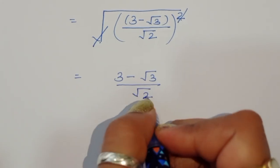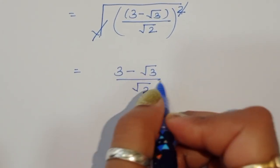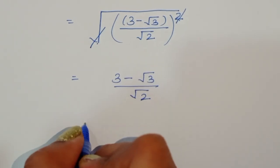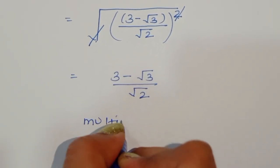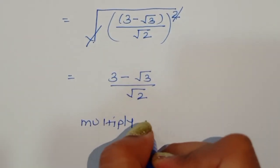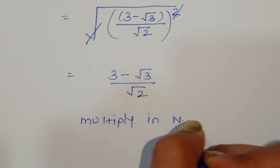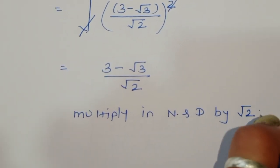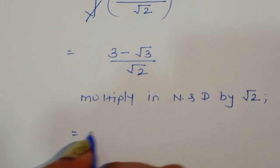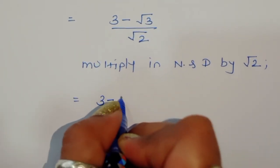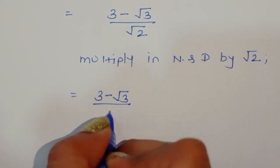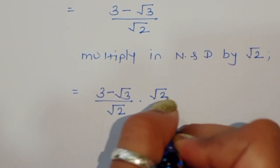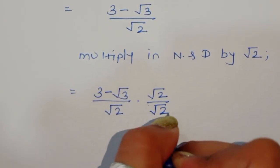Now we need to rationalize the denominator. To do this, we multiply the numerator and denominator by square root of 2. So we multiply (3 minus square root of 3) by square root of 2 in the numerator, and square root of 2 times square root of 2 in the denominator.